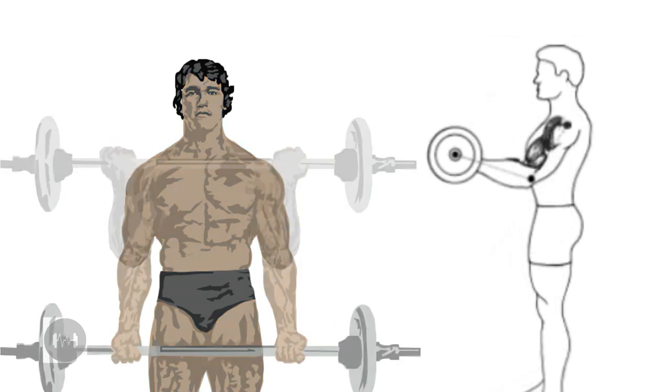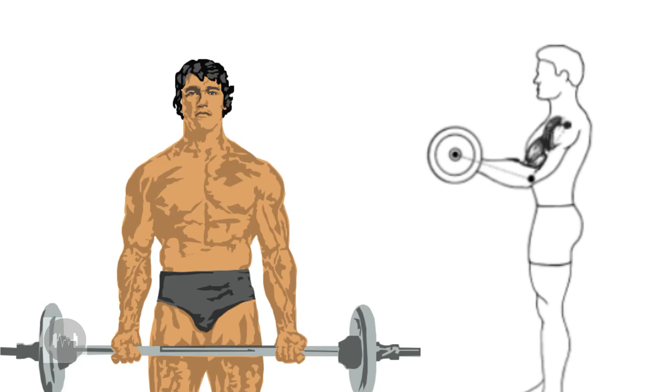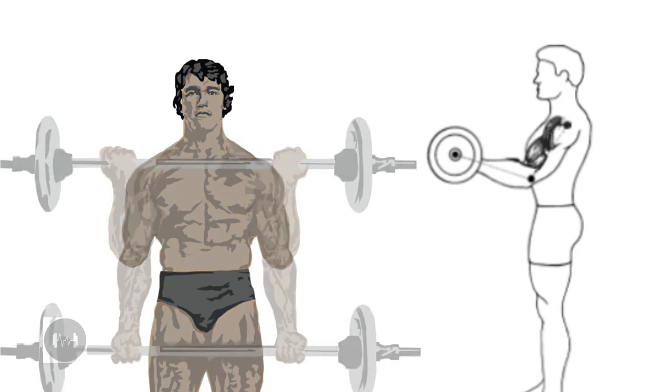Notice what happens when you lift the elbows during the barbell curl. Instead of isolating and really working the biceps, you are involving the front deltoids, which defeats the purpose of the exercise.